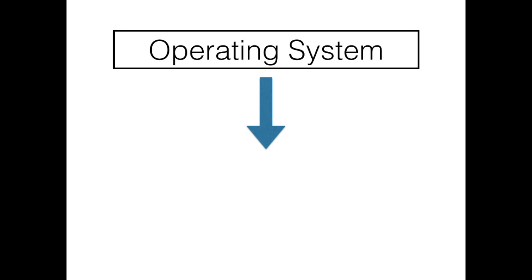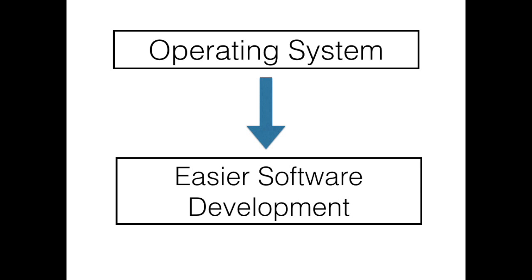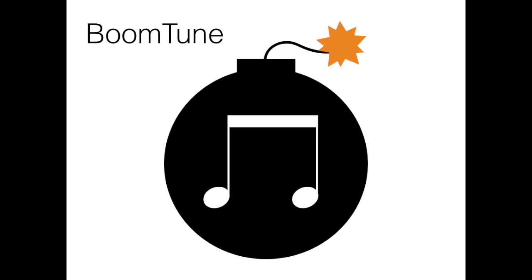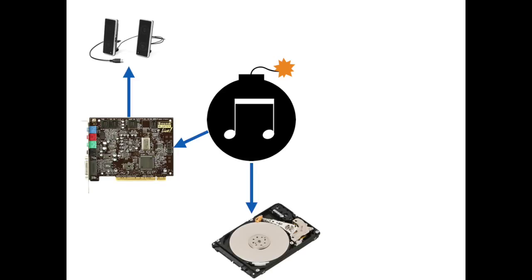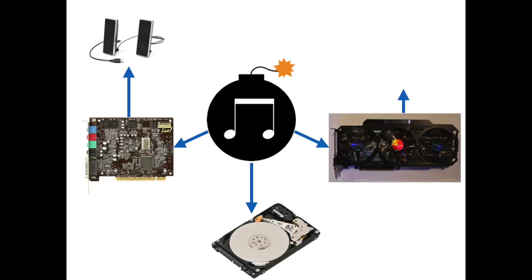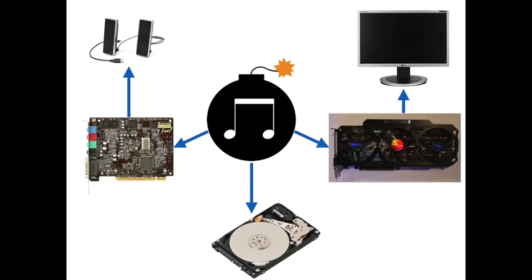To begin, an example to show how operating systems make writing software easier. Let's say we want to make a program that plays music — I will call it BoomTune. Now to play music, BoomTune is going to use a bunch of different parts of the computer: the sound card and the speakers to make sound, the hard drive to store music files, the graphics card and screen to display stuff to the user, and maybe other parts too.